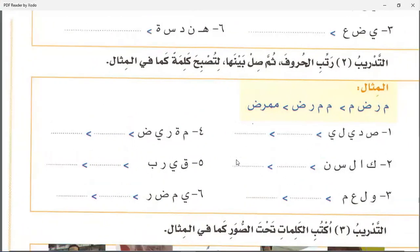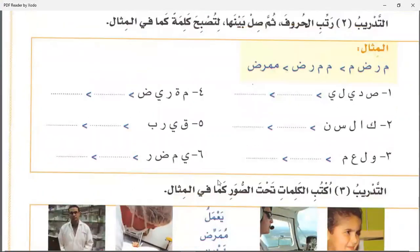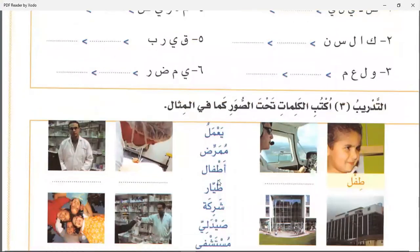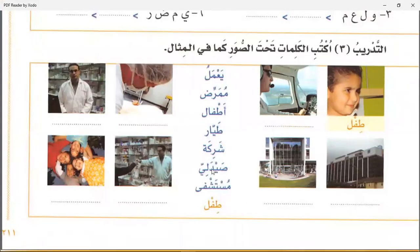In this way you will use these letters to make a word. Then write the words under the picture — words are written here, you will write these words under the picture. For example, under this picture you will write Tayyaar. In this way you will write words under these pictures.